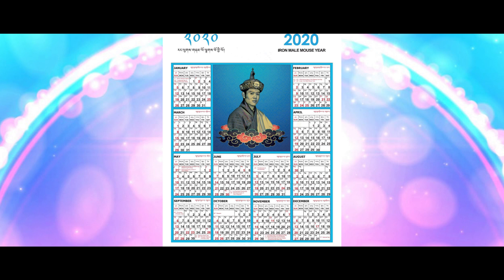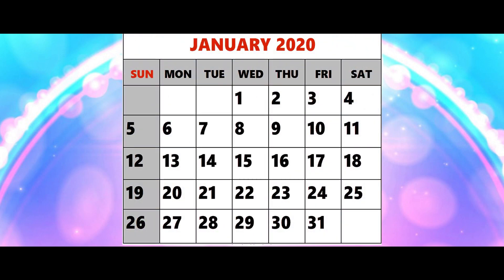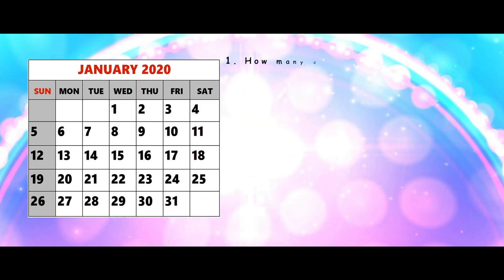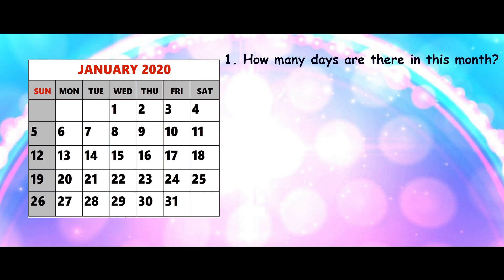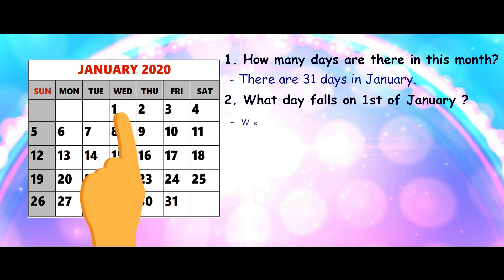Let us look at one of the months — for instance, January. How many days are there in this month? There are 31 days in January. What day falls on the 1st of January? Yes, Wednesday.